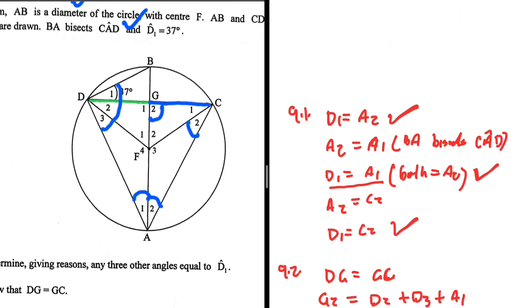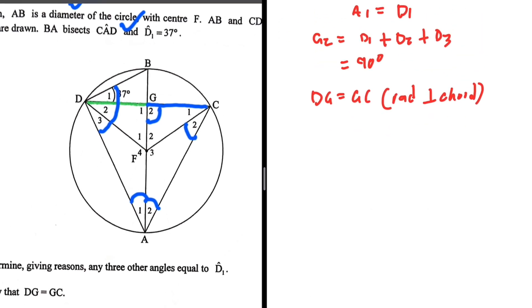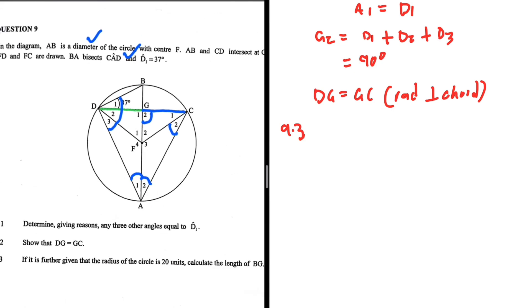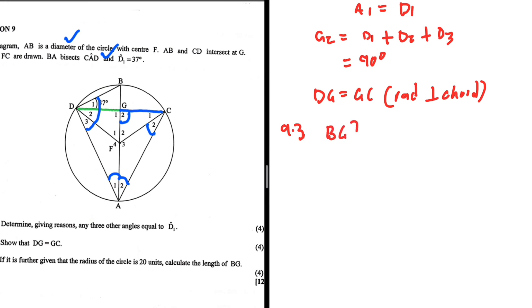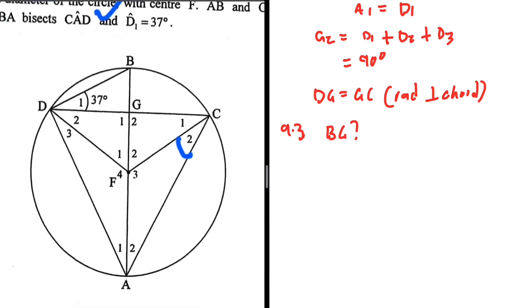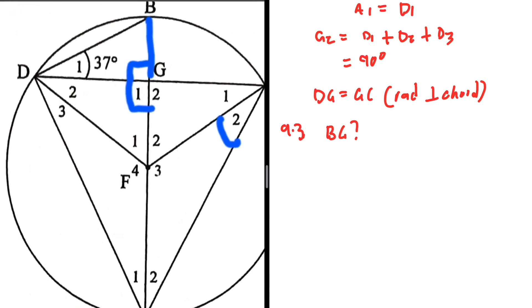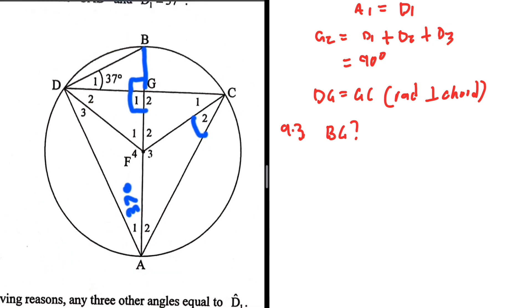That's 9.2 done. Let's take a look at 9.3: it is further given that the radius of the circle is 20 units — calculate the length of BG. We have an angle of 90 degrees here, and we know this angle is 37 degrees because it equals D1, and A1 equals D1. In triangle DGB, we can take cos of theta, which equals the opposite over the adjacent.